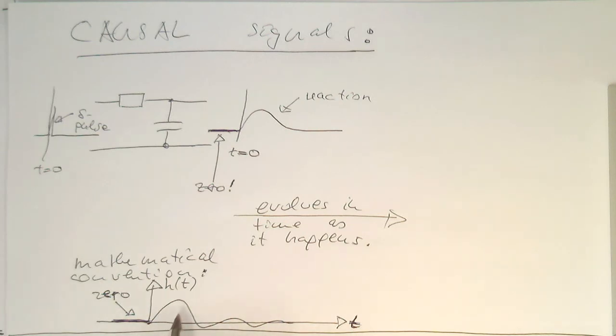So this defines this in mathematics, so that this h of t is zero for t smaller than zero. That's our definition of causality.